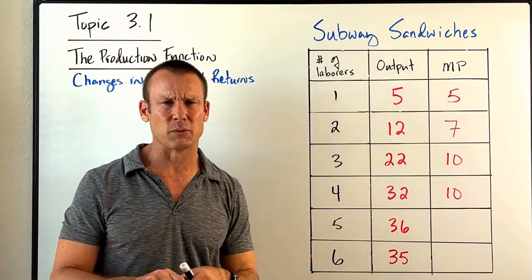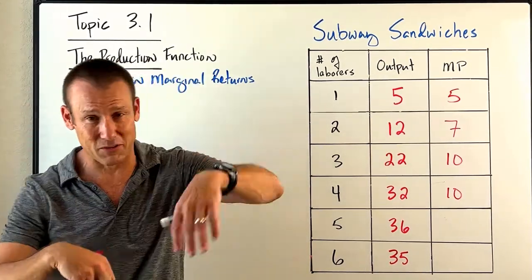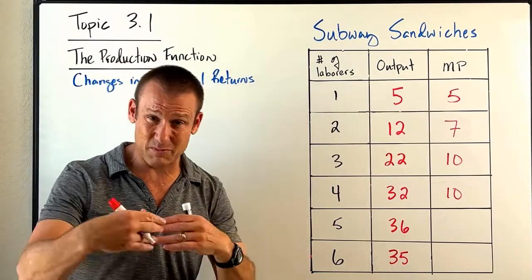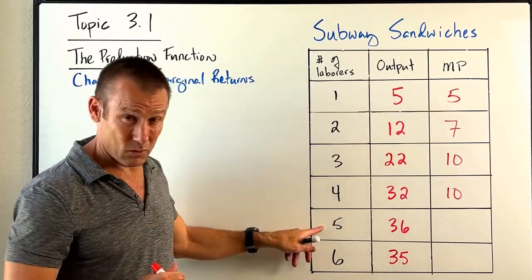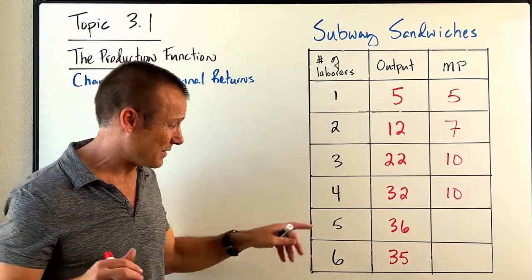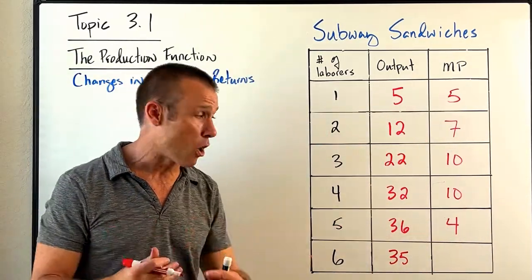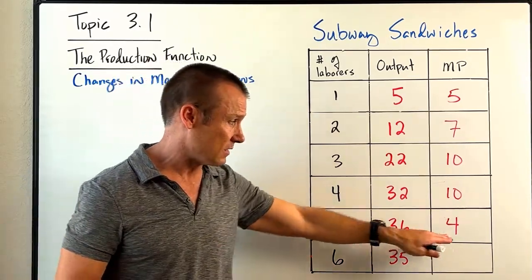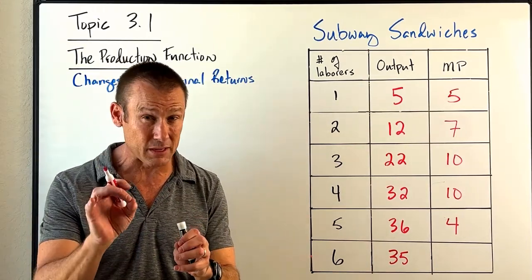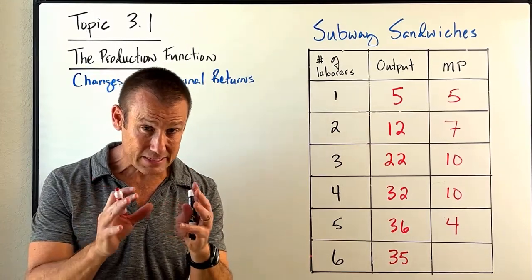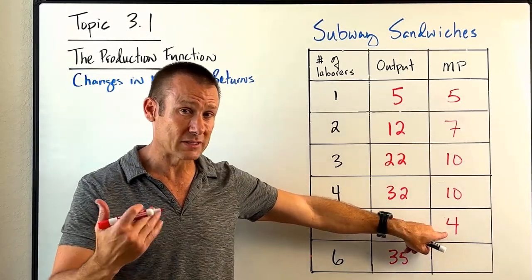Hiring the fifth person is a bit tough — we've got definite downtime, people running into each other, maybe side conversations. We can make more sandwiches but the gains aren't great: only four more, going from 32 to 36. Our marginal product is just four. This means we are now getting diminishing — or decreasing — marginal returns. Diminishing and decreasing are interchangeable.